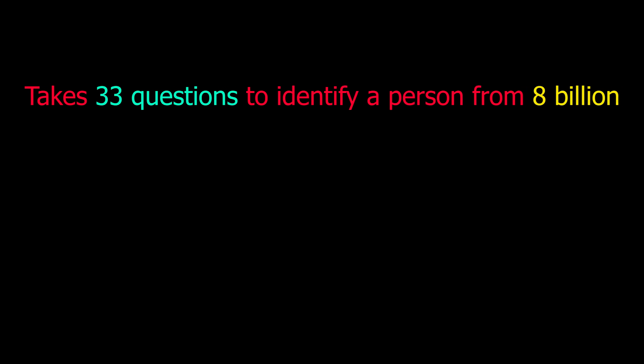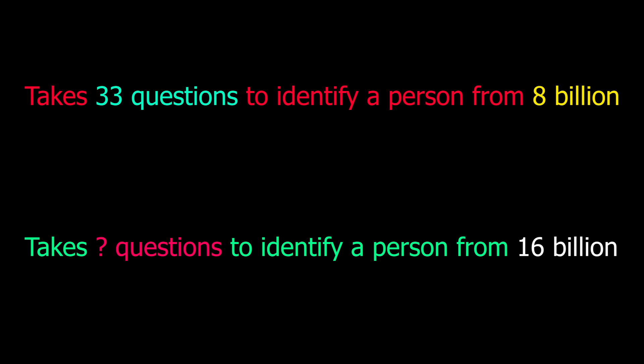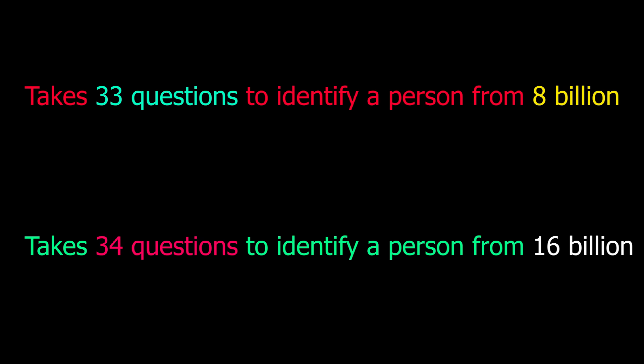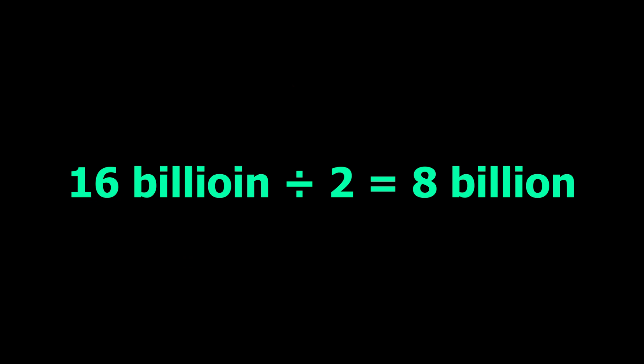Lastly, to truly understand how powerful this algorithm really is: if it takes 33 questions to identify one person from 8 billion people, how many more questions do you think it would take to identify one person from 16 billion people? We would need just one more question than for 8 billion. Because by asking one question, you can narrow down the 16 billion to 8 billion.